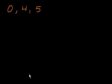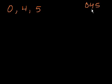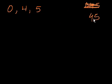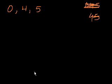One thing to keep in mind is you can't have 0 as the first digit, because if 0 is the first digit, you really don't have a three-digit number. For example, the number 0, 4, 5 — this really isn't a three-digit number. This is just 45, which is a two-digit number. So that one is not allowed. Maybe you want to pause and try to figure out all of the ways you can construct a three-digit number that doesn't start with 0 using the digits 0, 4, and 5.